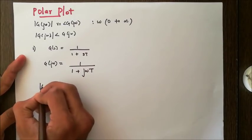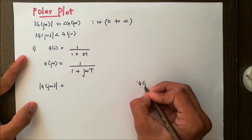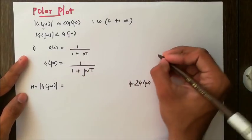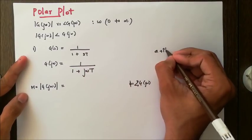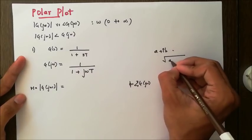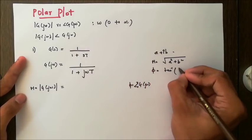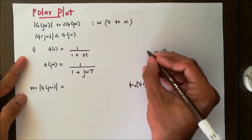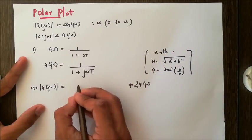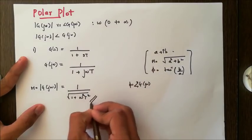The next step is to write the formula for the magnitude as well as the phase angle. As you may know, if we are given a complex number a + jb, the magnitude is √(a² + b²) and the phase angle is tan⁻¹(b/a). Using this, the magnitude here is 1 / √(1 + ω²T²).